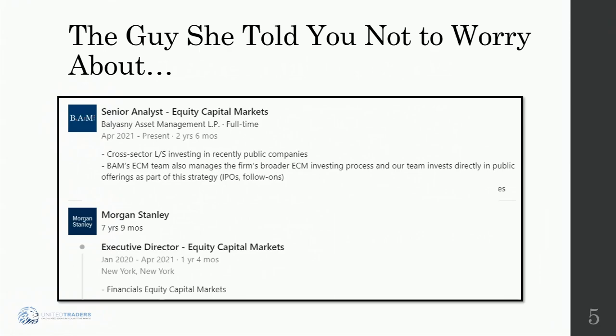An anecdotal story: I don't personally know this person, but I've talked to people at hedge funds that invest in IPOs. This person worked for Morgan Stanley — the number one equity capital markets investment bank in the world — grinding 100-hour weeks year after year, then quit in April 2021 when IPOs were at their peak to go invest in IPOs at a hedge fund. Ask yourself: why is the compensation for investing in IPOs so much higher than being the middleman? And after this guy gets paid, how much is left for you?